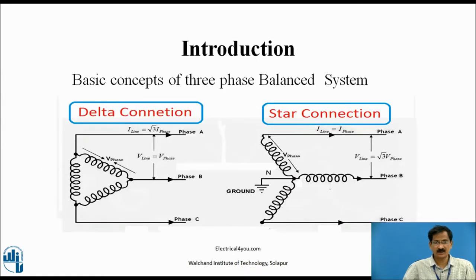Introduction. Basic concepts of three-phase balanced system. In the last video, we discussed delta type three-phase system. A system is said to be a balanced supply when the three voltages, three phases are having same magnitude but differ in phase difference of 120 degree.